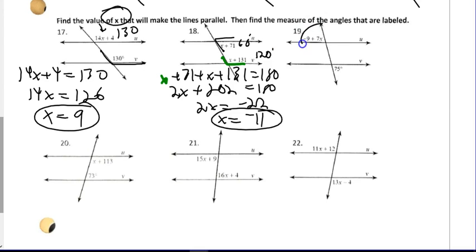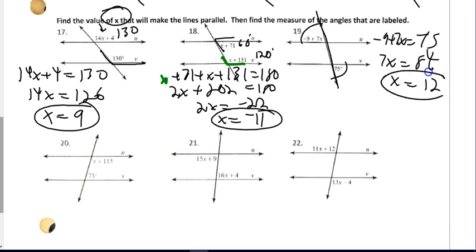Alright, number 19, exterior angle, exterior angle, alternating on the transversal, which means they are alternate exterior, and they are equal. So, therefore, negative 9 plus 7x equals 75. I'm going to add 9 to both sides and get 84. 84 divided by 7 is 12. I've found x. It's pretty easy. When I plug 12 in here, I'm going to get the same answer, 75 degrees.